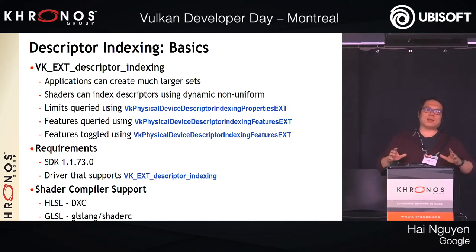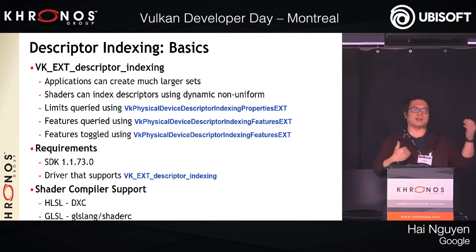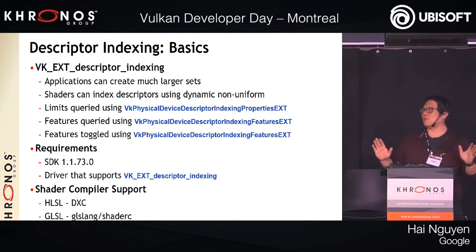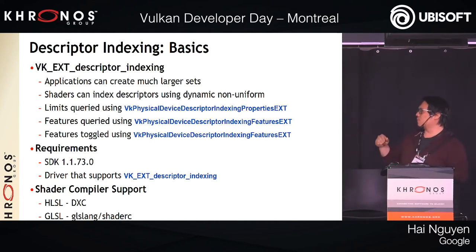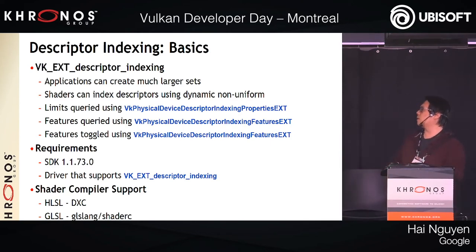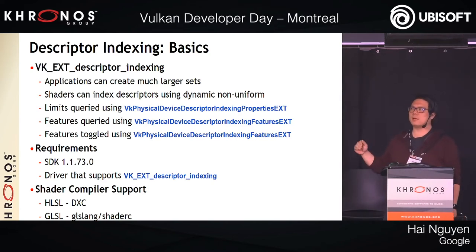I started to write code snippets, but by the second slide it was four pages of code. I'll write a sample, post it somewhere, and tweet it via @APIVulkan so people can see it. It will require SDK 1.1.73 and your driver must support VK_EXT_descriptor_indexing. As for compiler support: DXC supports this for HLSL, and GLslang and shaderC support it for GLSL. I'm not sure if GLSL itself is planning to add it — you can check the GitHub issue.